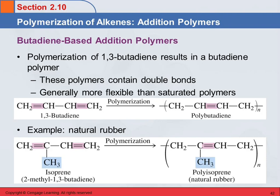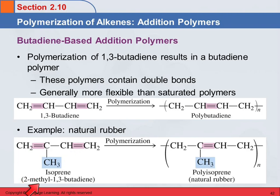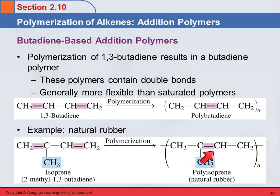There are also butadiene addition polymers involving 1,3-butadiene. When this polymerizes, we get polybutadiene. Some of these are substituted — isoprene, which is 2-methyl-1,3-butadiene, polymerizes to give polyisoprene. This is what natural rubber is. These polymers are not saturated — they have a double bond — so they tend to be a little more reactive and will probably decompose more than the saturated ones.